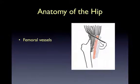Additionally, you'll need to remember that the femoral vessels are located just medial to the hip joint and may at times be visible when scanning the joint. The femoral nerve, not shown here, lies lateral to the femoral artery.